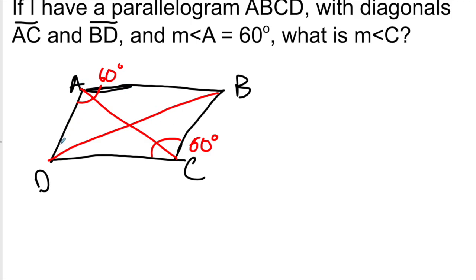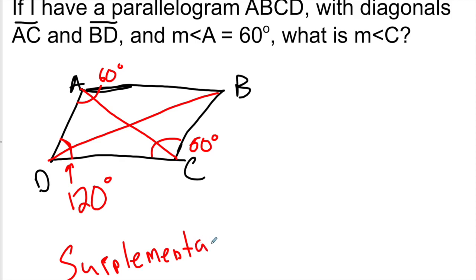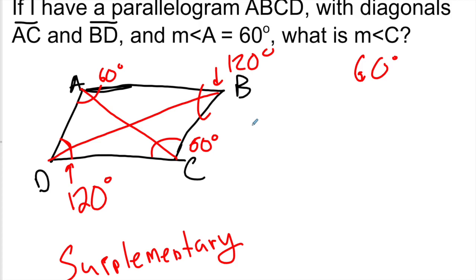We also know that angles D and B have to be congruent. Angle D has to equal 120 degrees because these are supplementary — they add up to 180 degrees. So this is 120, and this is also 120. Notice that figures aren't drawn to scale. These angles we don't actually know the exact diagonal intersection because unless it's a rhombus or square, we don't know the diagonals meet at 90 degrees. The answer we're looking for is 60 degrees.